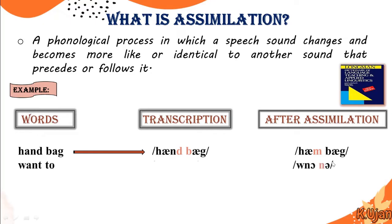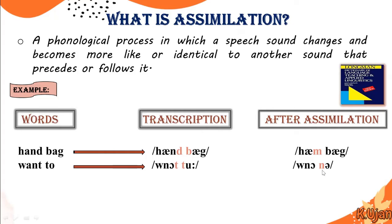Here is another example: 'want to' — its transcription is /wɒnt tuː/ — but in connected speech it is sometimes pronounced as 'wanna', without the /t/ sound, which changes to an /n/ sound. This type of change in connected speech is known as assimilation.